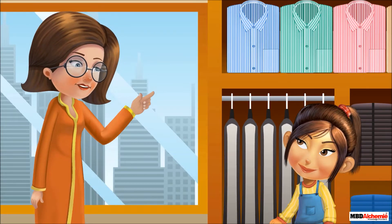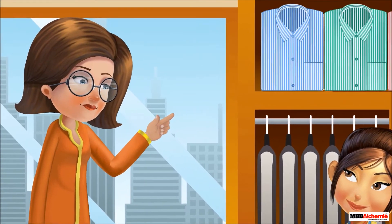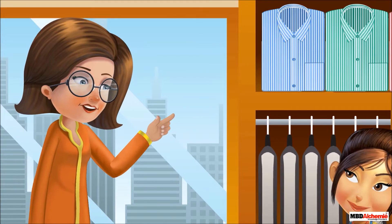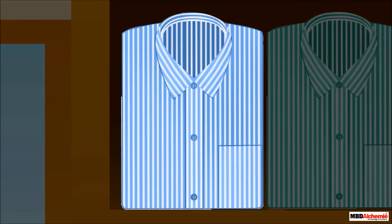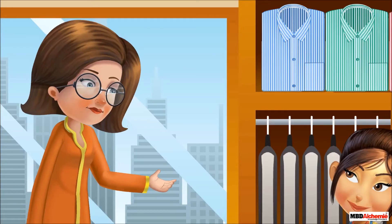Alisha, look at that shirt hanging over there. What do you observe? Do you see any pattern? I can see there are two stripes of different colors — one is white and the other blue. Very good, Alisha.